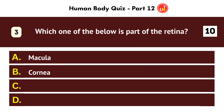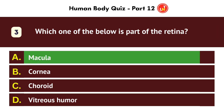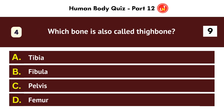Which one of the below is part of the retina? Macula. Which bone is also called the thigh bone? Femur.